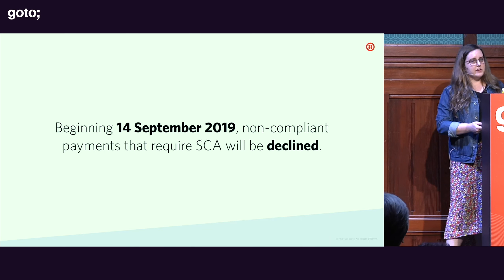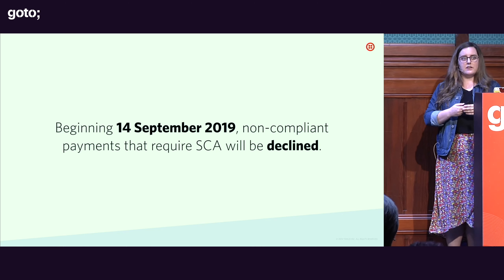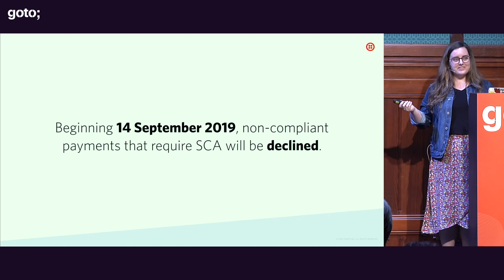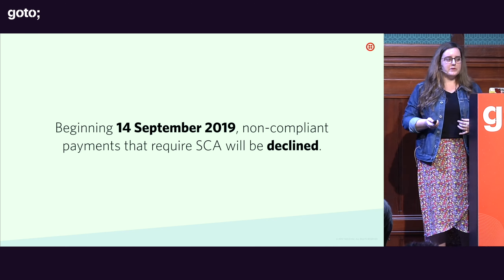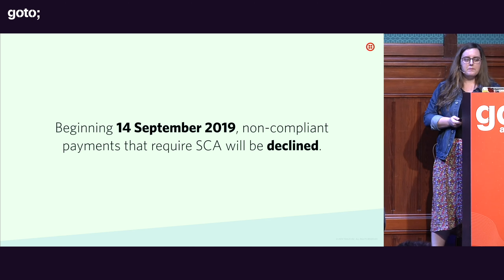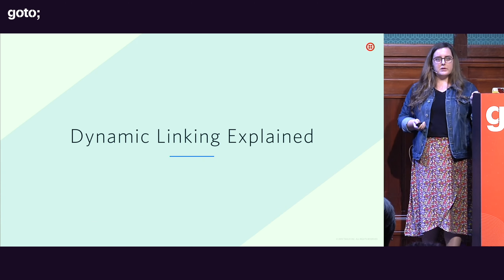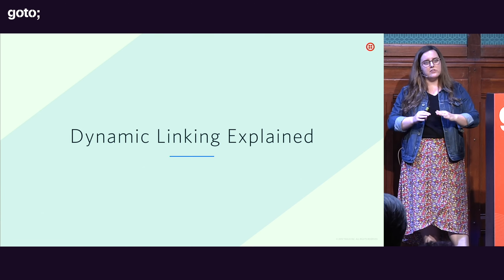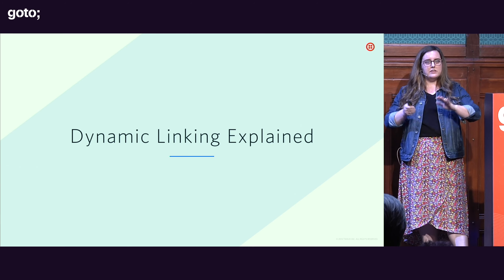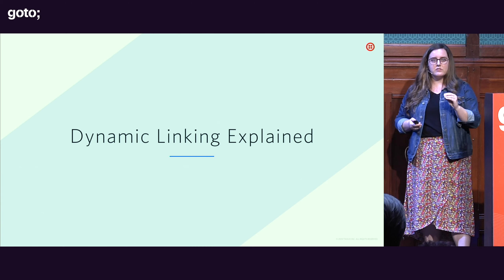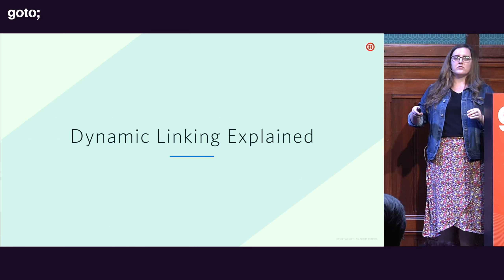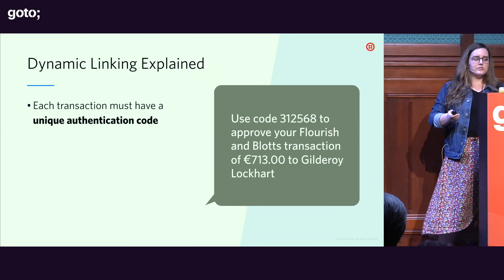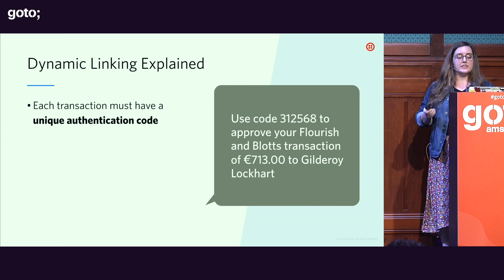Starting September 14th, non-compliant transactions will be declined — TBD how well they'll enforce this, but you probably don't want to risk it if this affects your business. Specifically, I want to talk about dynamic linking, the big requirement under strong customer authentication. It's not just that you have to send a second factor — that second factor also has to convey information about the transaction, which is wrapped up in dynamic linking. First, each transaction must have a unique authentication code.